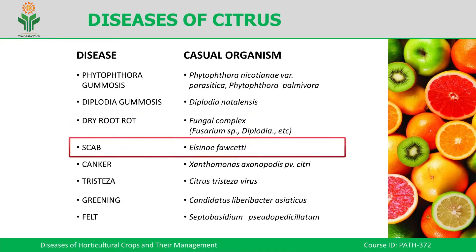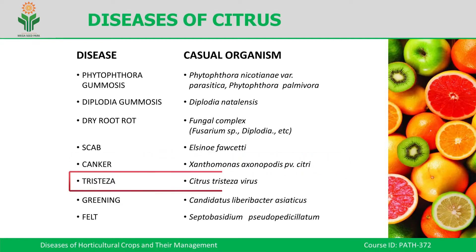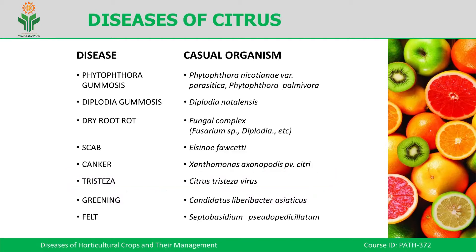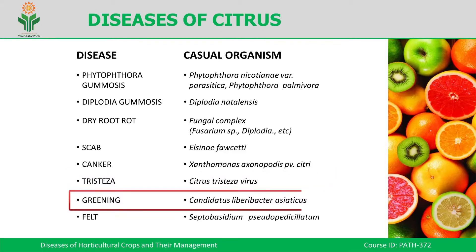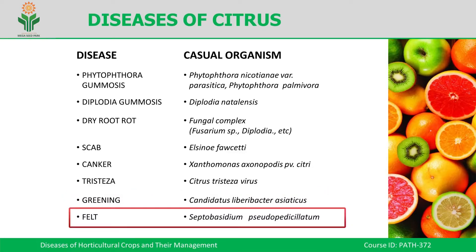Scab is caused by Elsinoe fawcettii, an Ascomycetes fungus, and Canker is caused by Xanthomonas axonopodis pv. citri. We all know that Xanthomonas is a yellow monotrichous bacterium. Tristeza virus, also known as quick decline, causes a quick decline in the plant's stature once it is affected; it is caused by Citrus tristeza virus. Another important viral disease is Greening, caused by Candidatus Liberibacter asiaticus, a bacterial disease, and the felt disease caused by Septobasidium pseudopedicellatum.